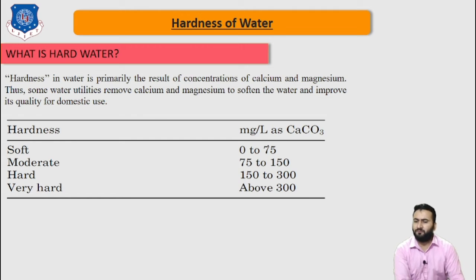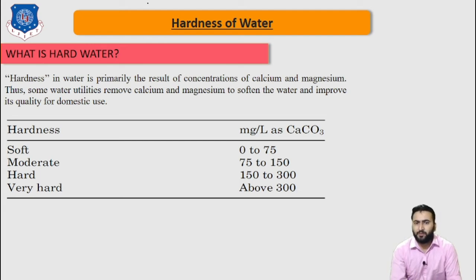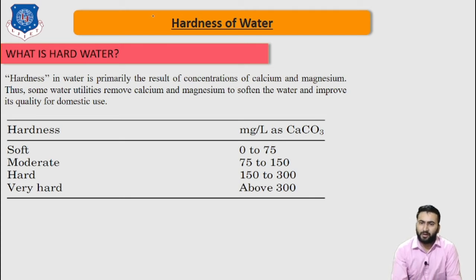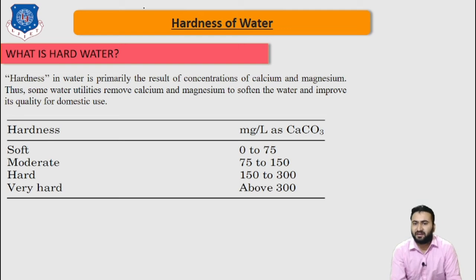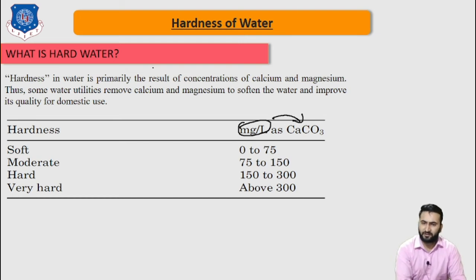Now let us discuss about the hardness of water. Hardness in water is primarily the result of the concentration of calcium and magnesium. Many water utilities remove calcium and magnesium to soften the water and improve its quality for domestic use. Other ions that produce hardness include iron, manganese, zinc, and aluminum, but these are generally not present in significant quantities. Therefore, total hardness is usually defined as the sum of magnesium and calcium hardness in milligrams per litre, measured in the form of CaCO₃.